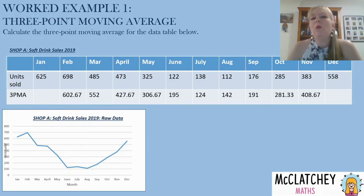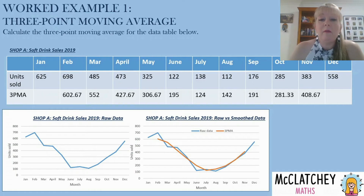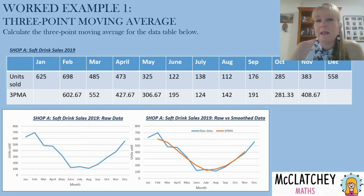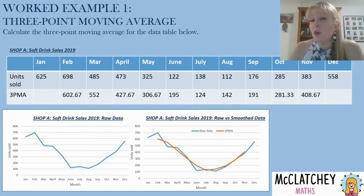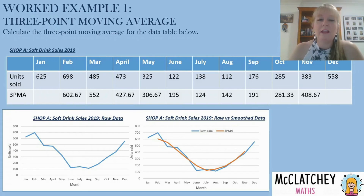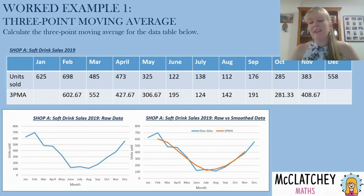Now let's have a quick comparison of what this has done to smooth our data. Here's our original data shown on the left in blue, and once we've smoothed that, the orange data is our three-point moving average. You can see there aren't as many little hiccups along the road — it's a fairly smooth graph. What that shows us is that from January through to July there's a constant decline, and then from July to December there's pretty much constant increase. You would expect that with soft drink sales — more in summer when people are hot and thirsty, and less in winter when people drink hotter drinks.